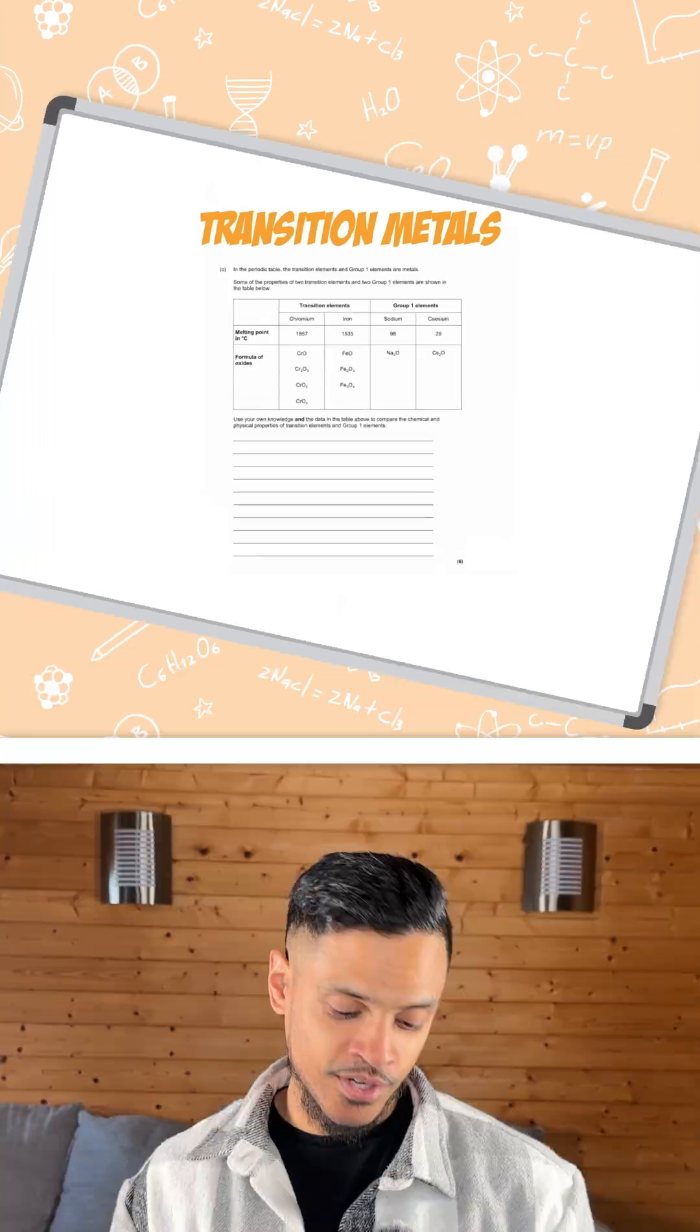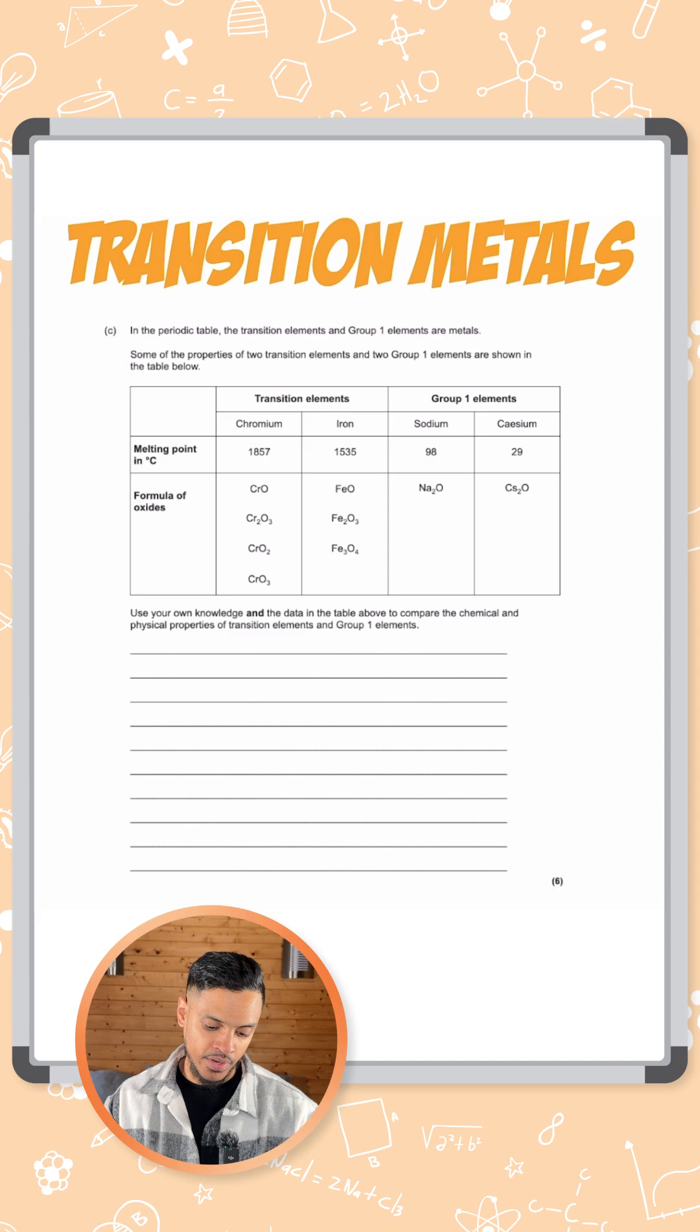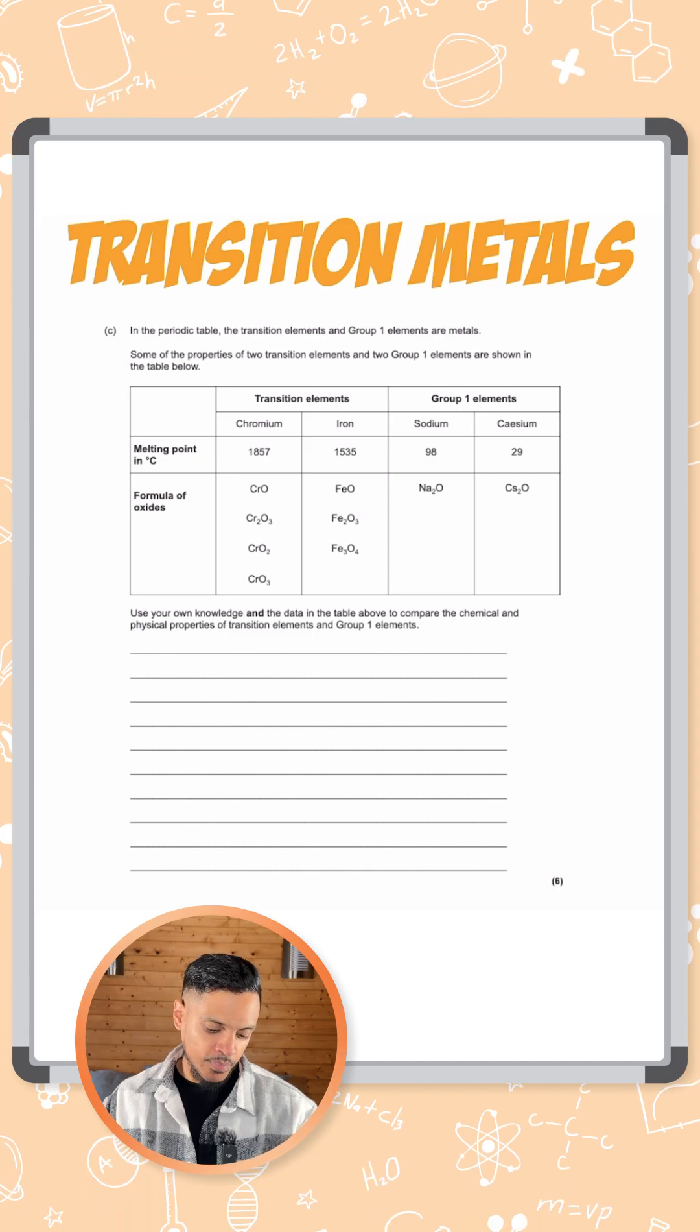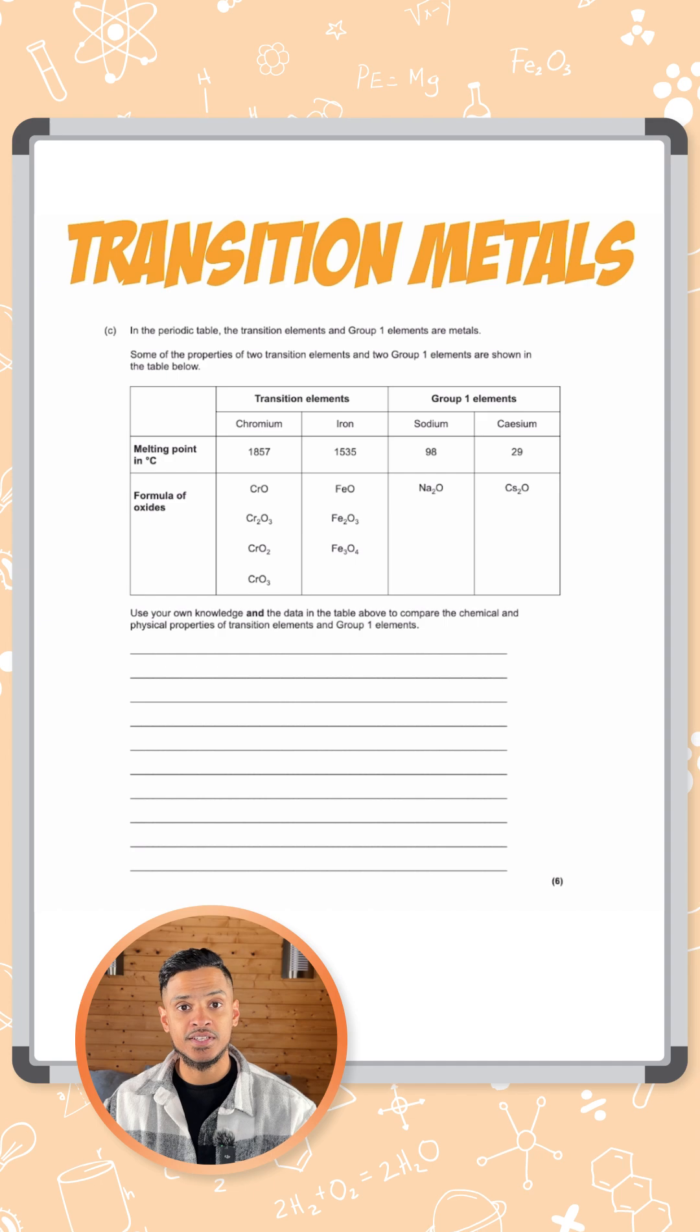We have a six marker here on transition metals. It says in the periodic table the transition elements and group one elements are both metals. Some of the properties of two transition elements and two group one elements are shown in the table below.